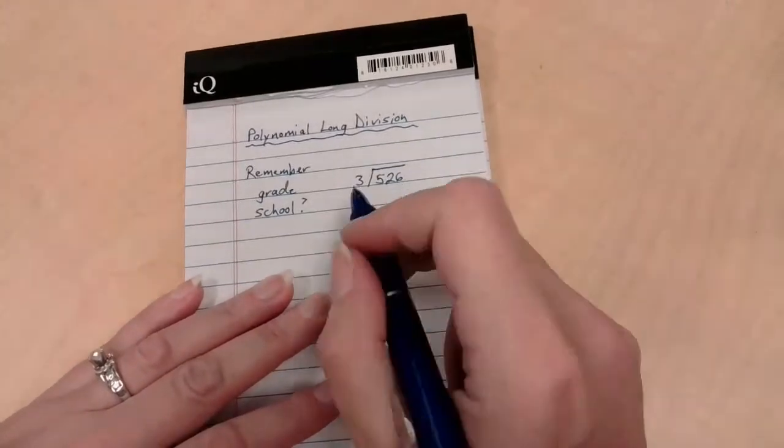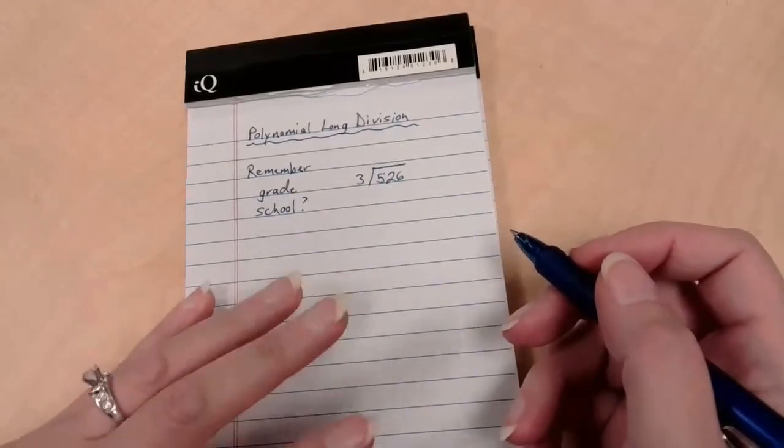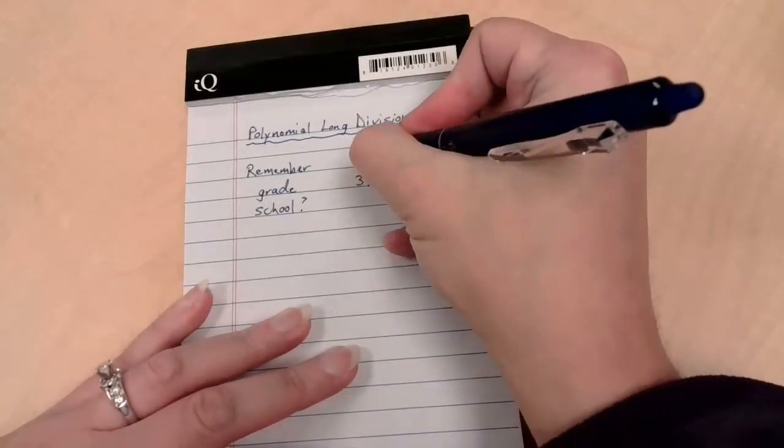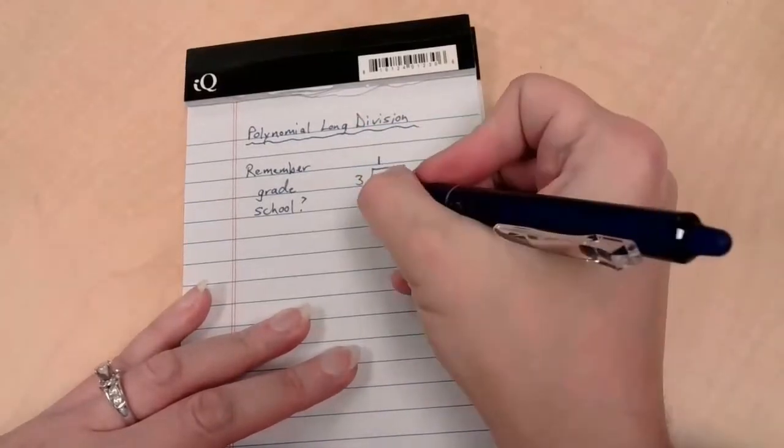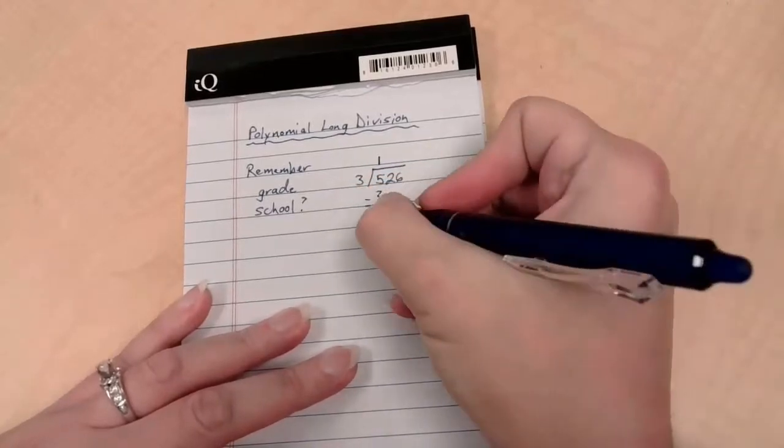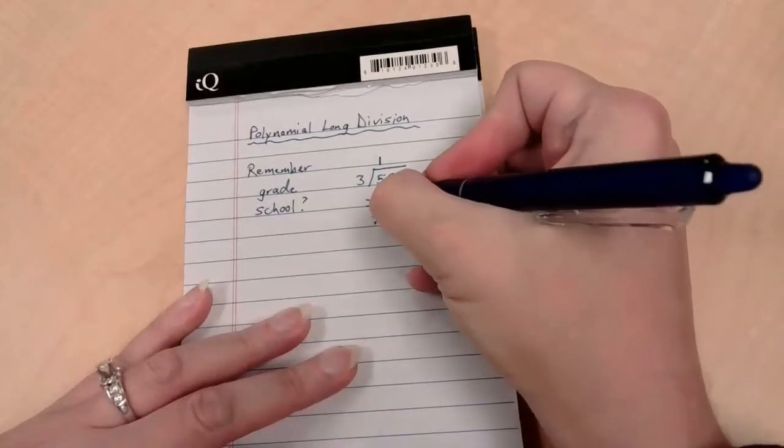So we're actually going to start with a walk down that lane. This is part of a larger topic, so this is a video that only focuses on polynomial long division for the moment. We're talking 3 dividing into 526. How did this work? How many times does 3 go into 5? Once, and then 1 times 3 is 3, and then we subtracted.